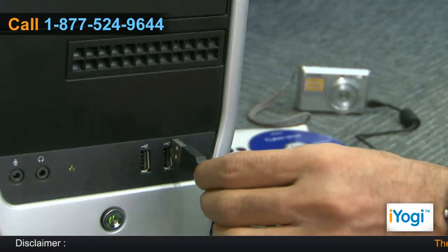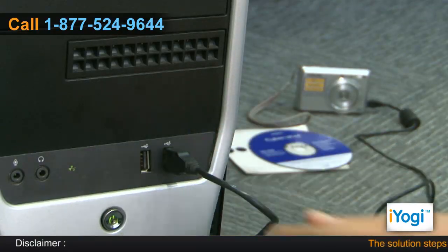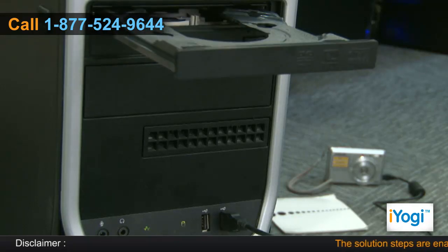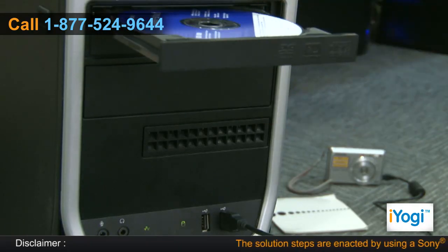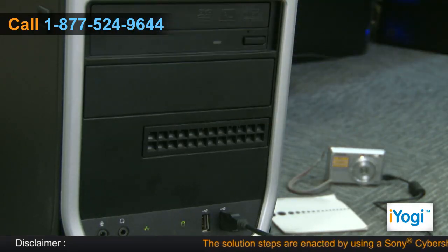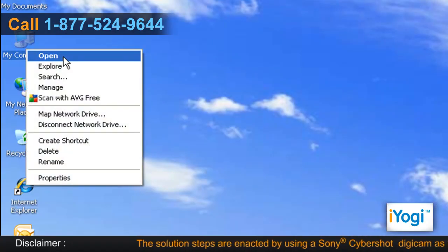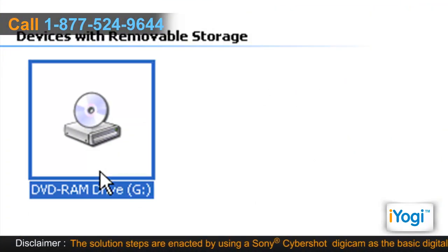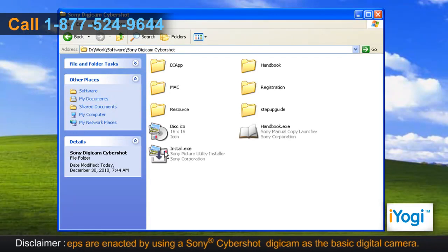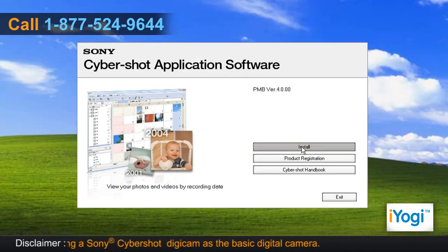Connect your Digicam with your computer. Place the Digicam software CD into your computer's disk tray. Open My Computer and double click on the CD drive icon. Double click on the setup file and click on Install.